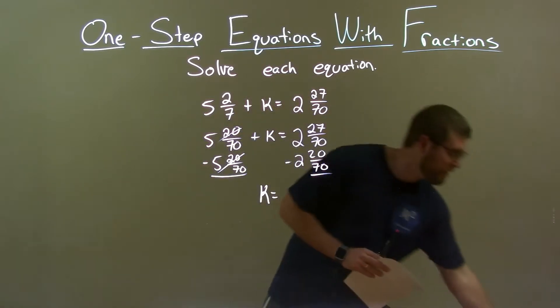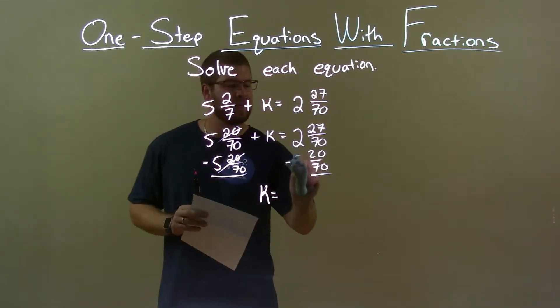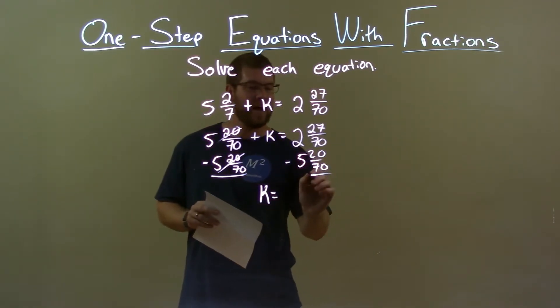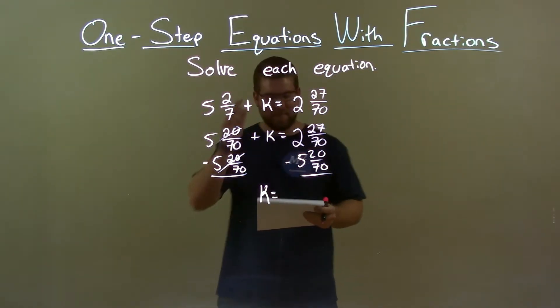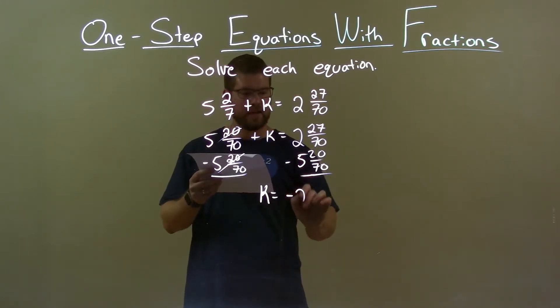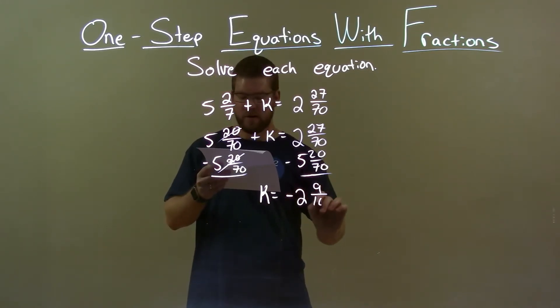That's a 5. Excuse me, I wonder it looked a little weird. I forgot that this is a 5 right there. Let's subtract 5 and 20 over 70 from both sides. When we subtract that and simplify, we end up with the final answer of negative 2 and 9 over 10.